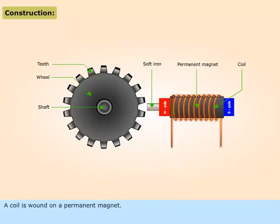A coil is wound on a permanent magnet. It is extended by a soft iron pole piece.